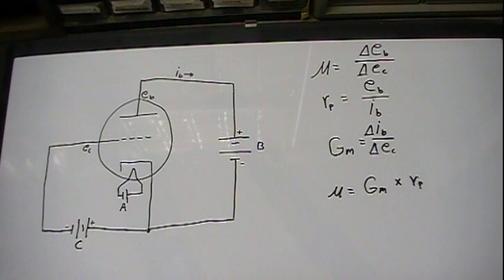That tube, where you have a filament or cathode and a plate, is a diode tube. Two elements. Two elements, die for two, ode for electrodes. And those are used as rectifiers and detectors today, or in tube radios.